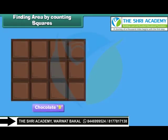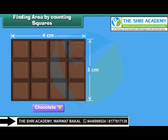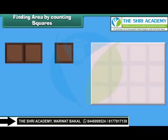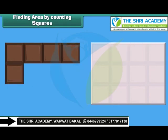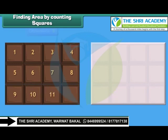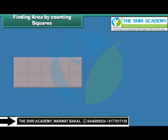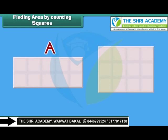Now let us find the area of chocolate B. The length of chocolate B is four centimeters and its width is three centimeters. Four squares can be arranged along its length and three squares along its width. In total, twelve squares can be arranged on this chocolate. Its area is twelve square centimeters. So, among chocolates A and B, chocolate B is bigger in size.